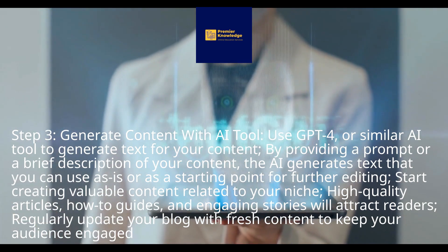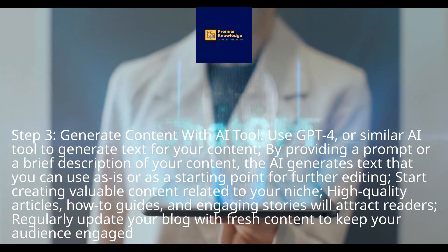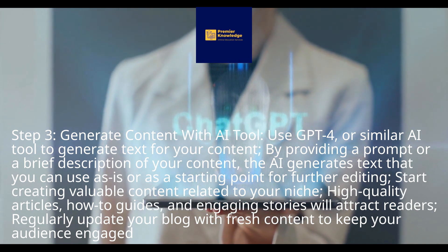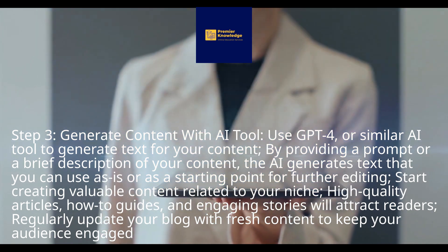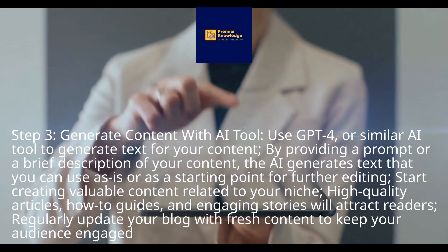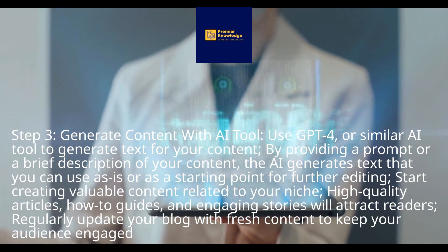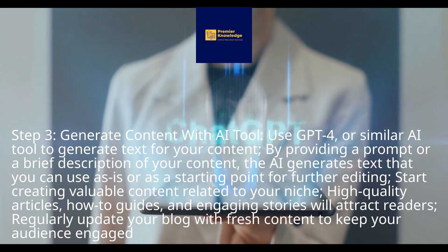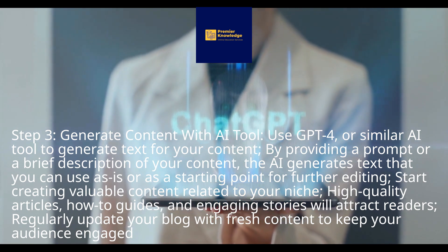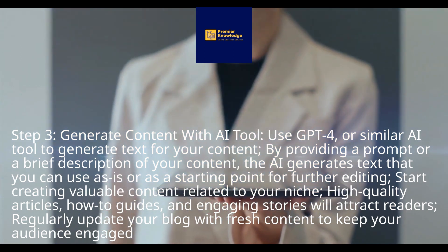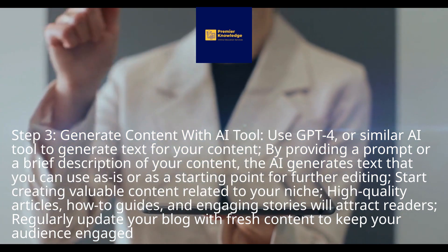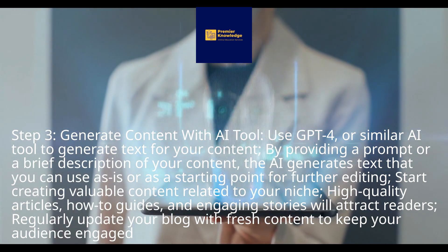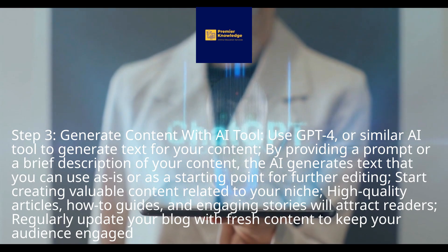Step 3: Generate content with AI tools. Use ChatGPT-4 or a similar AI tool to generate text for your content. By providing a prompt or a brief description of your content, the AI generates text that you can use as is or as a starting point for further editing. Start creating valuable content related to your niche — high-quality articles, how-to guides, and engaging stories will attract readers. Regularly update your blog with fresh content to keep your audience engaged.